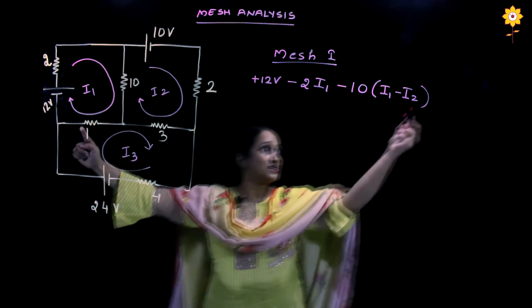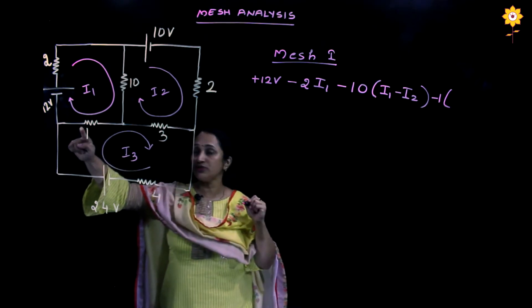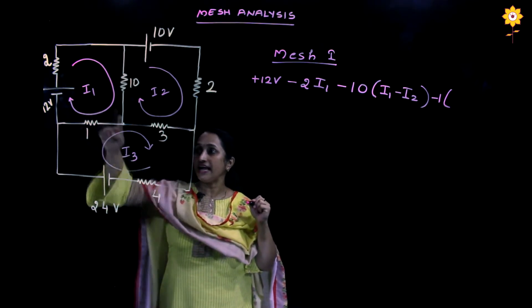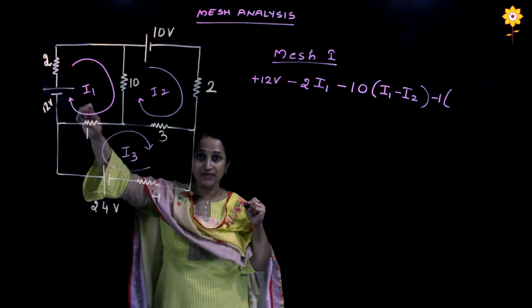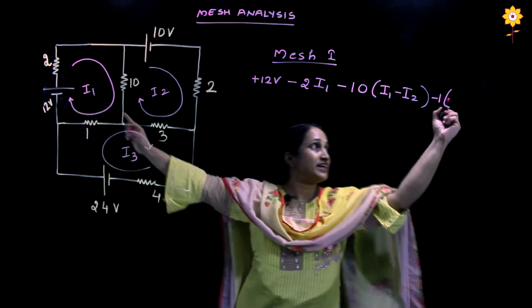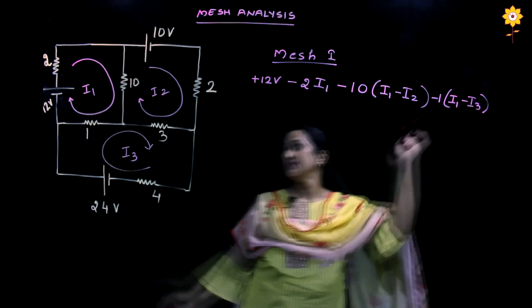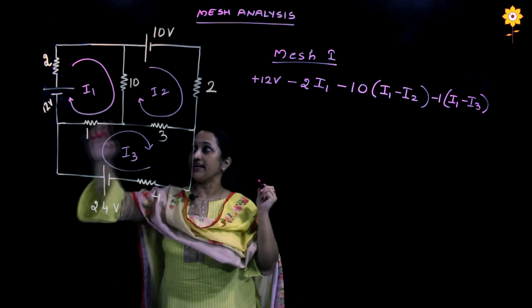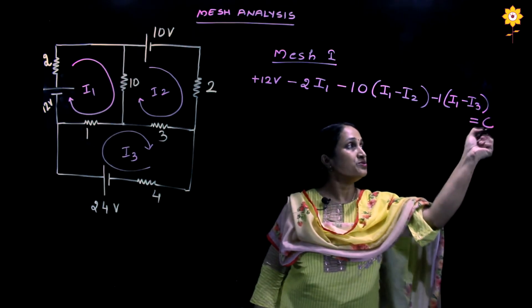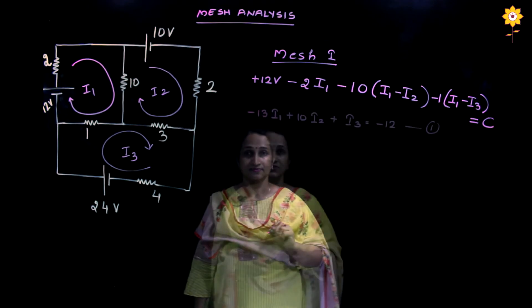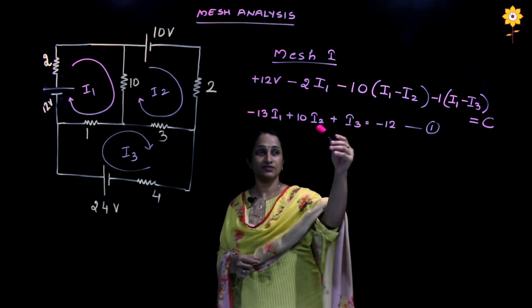Continuing mesh 1, the next element is a 1-ohm resistor. Two currents flow through it in opposite directions — I1 and I3. Since we are writing the equation for mesh 1, we write minus 1 times (I1 minus I3). Having covered the entire mesh, the sum of these terms equals zero.